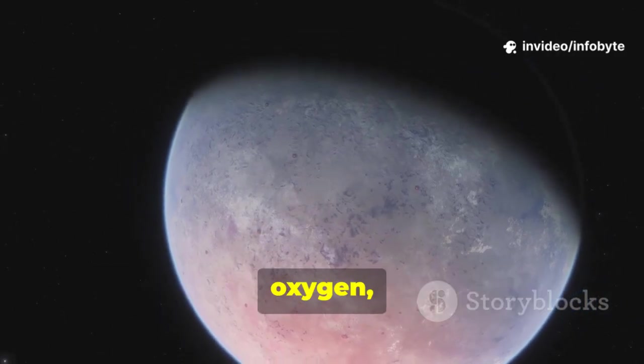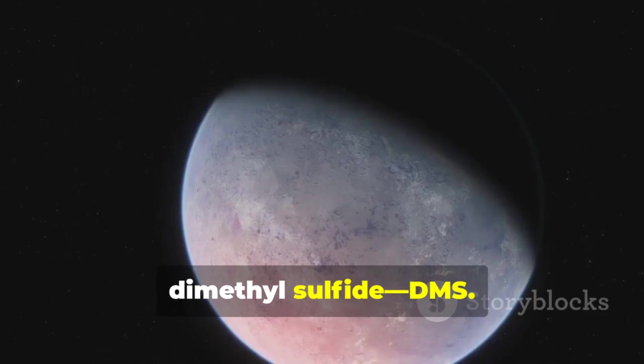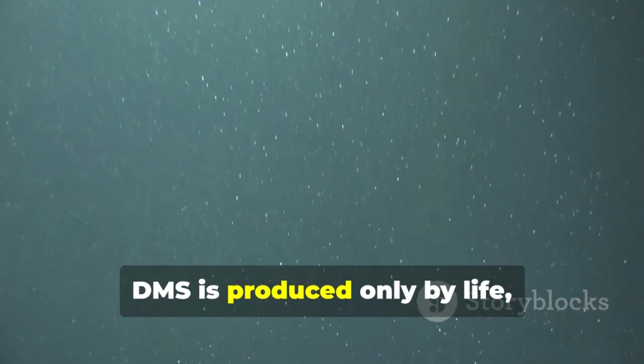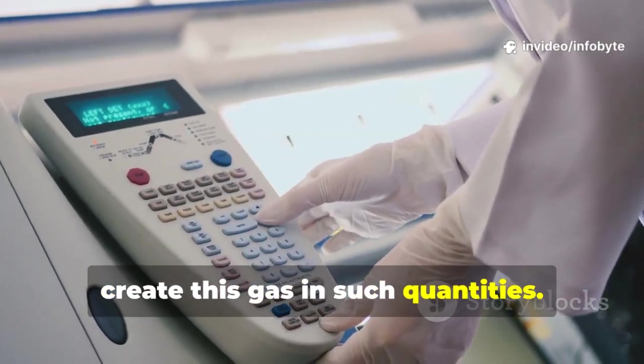The data, abundant water vapor, oxygen, methane and crucially, dimethyl sulfide. On earth, DMS is produced only by life, mainly marine phytoplankton. No known non-biological process can create this gas in such quantities.